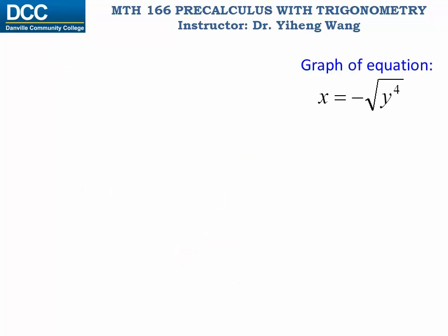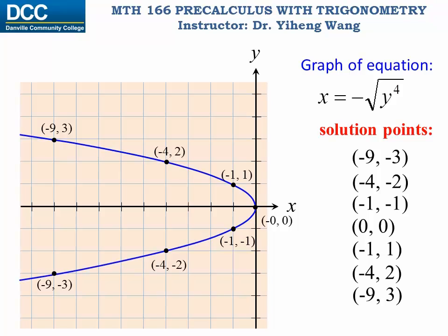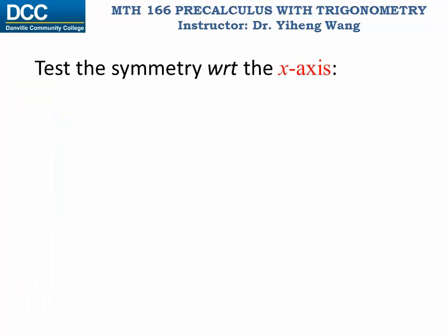Let's look at another equation and sketch it using the point plotting method. I first calculate a couple of solution points, plot them on the Cartesian plane, and sketch a smooth curve. We can see that this graph is symmetric about the x-axis — the top half and the bottom half are mirror images with respect to the x-axis. Analyzing the solution points, for every point (x, y) on the graph, the point (x, -y) must also be on the graph. This means that it doesn't matter if the y value is positive or negative — as long as they have the same absolute value, their corresponding x value is always the same.